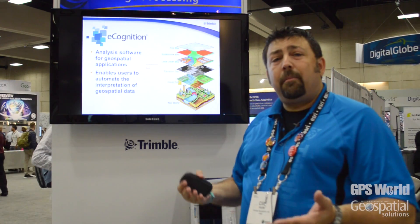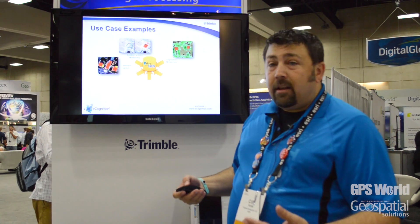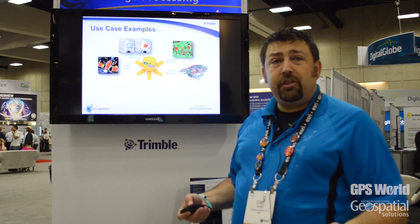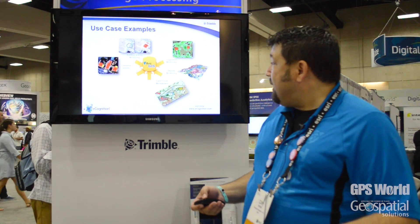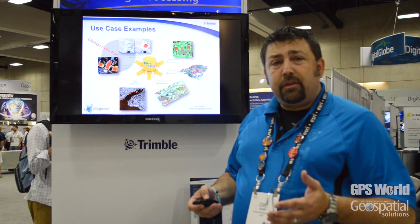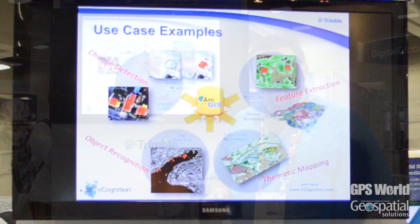eCognition allows you to automate the process of extracting those features of interest out of your data. A couple of examples would be cadastral mapping, updating your cadastral maps, or looking at change detection where buildings or other types of features may have come or gone from one period to the next, vegetation mapping, post-disaster response, looking at changes that have happened in the environment post-disaster, typical land cover classification mapping, as well as very specific features of interest. These basically break down into four different categories: change detection, feature extraction, thematic mapping, and object recognition.